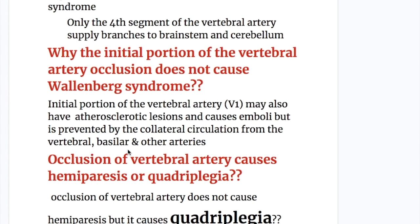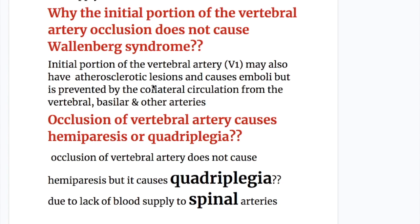Why does initial portion of the vertebral artery occlusion not cause Wallenberg syndrome? The initial portion, the V1 segment, may have atherosclerotic lesions and cause emboli, but this is prevented by collateral circulation from the other vertebral, basilar, and other arteries.